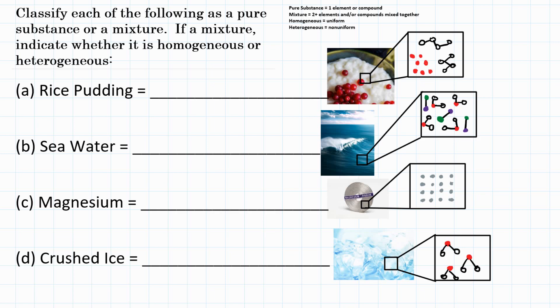Classify each of the following as a pure substance or a mixture. If it is a mixture, indicate whether it is homogeneous or heterogeneous.